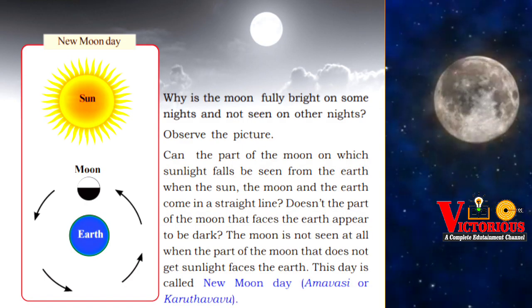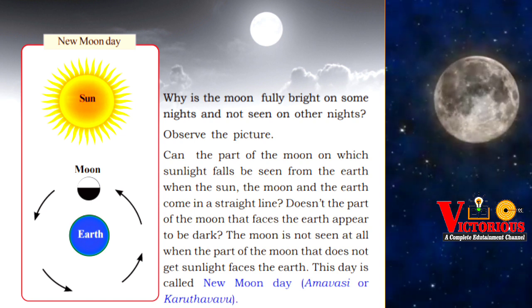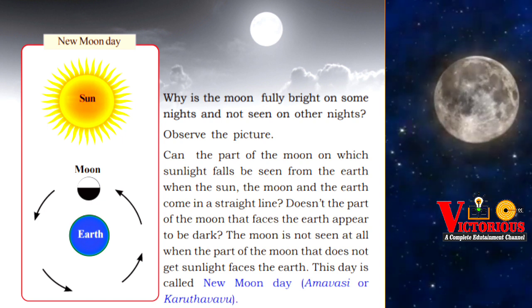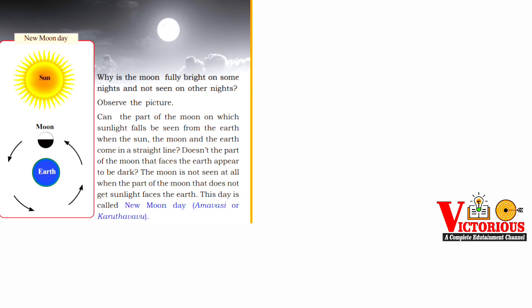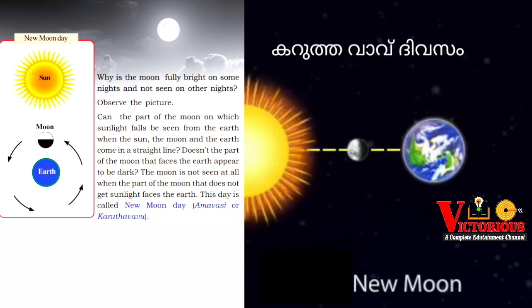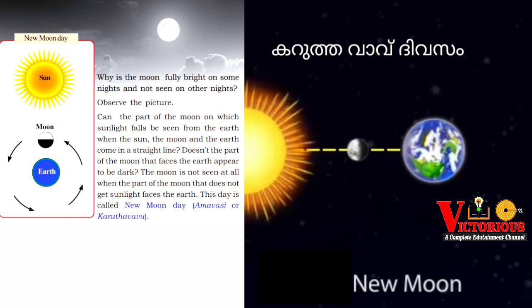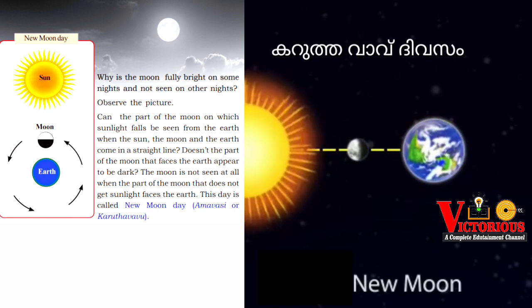Why is the moon fully bright on some nights and not seen on other nights? We already observed the video partially. Today we are describing how it is. We discussed new moon day — the part of the moon on which sunlight falls can be seen from the earth.